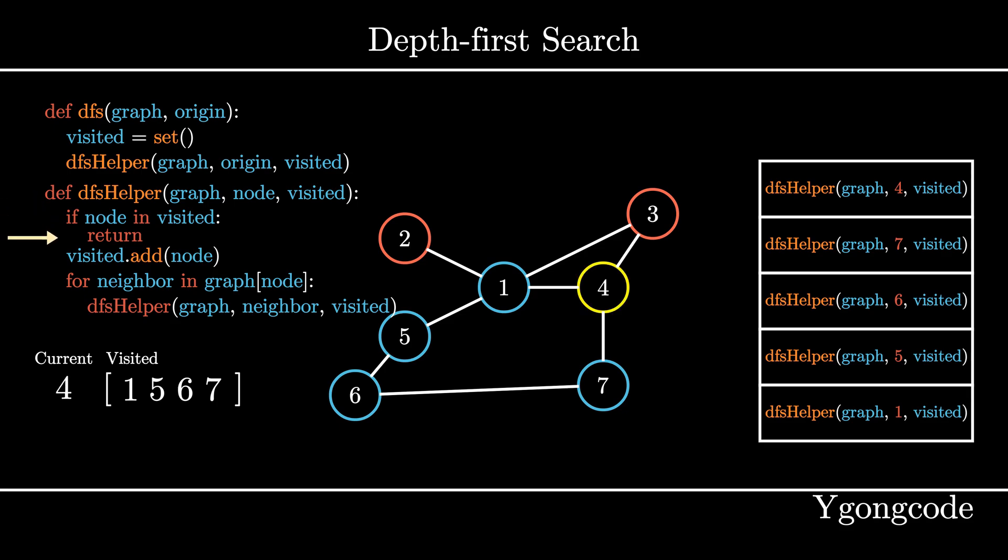At dfsHelper 4, since node 4 hasn't been visited, we add it to our visited set and pick one of its neighbors, node 7, and invoke dfsHelper on node 7.